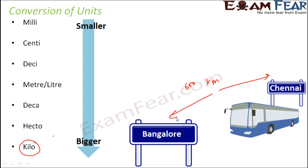You might ask: why do we really need so many units? We need them because not every time are we measuring such big distances. Sometimes we need to measure a very small distance, like the thickness of a page. The thickness of paper is really, really thin — very small — and that is when we make use of smaller units like millimetre.